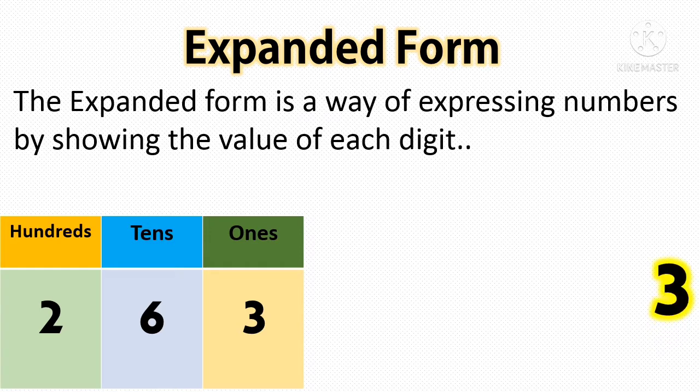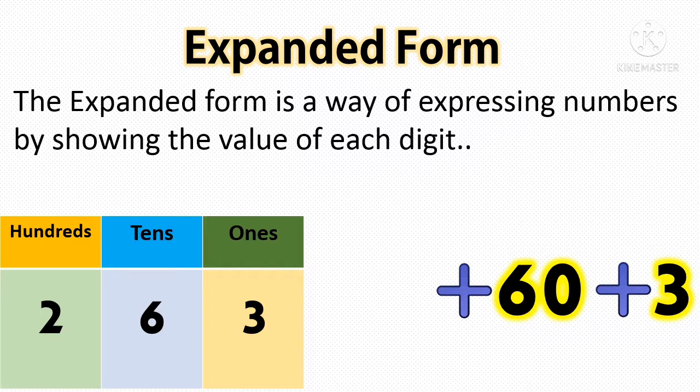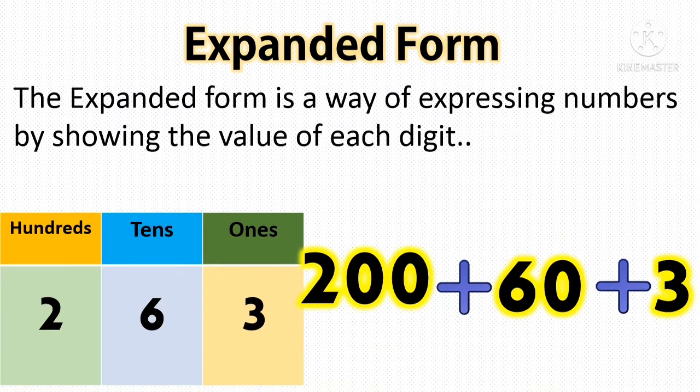3 is at the 1's place. It's worth itself. So 3 plus 6 is at the 10's place. 10 times 6 is 60, plus 2 is at the 100's. 100 times 2 is 200. So this is the expanded form.